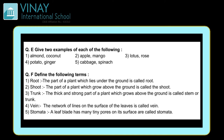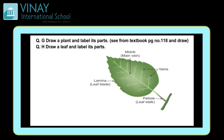Vein — the network of lines on the surface of the leaves is called vein. Leaves ki surface par jo lines ka network dikhta hai usko hum vein kehte hain. Stomata — a leaf blade has many tiny pores on its surface, these are called stomata. Yeh jo chote chote pores hote hain jisse leaf breathing karta hai plant ke liye, usko hum stomata kehte hain.